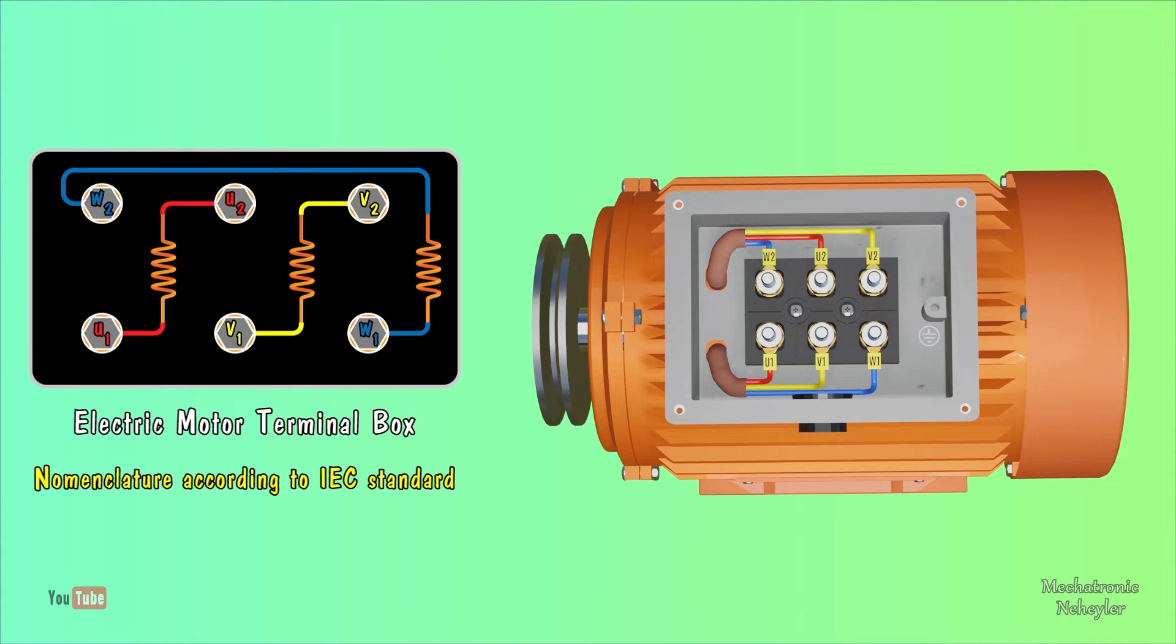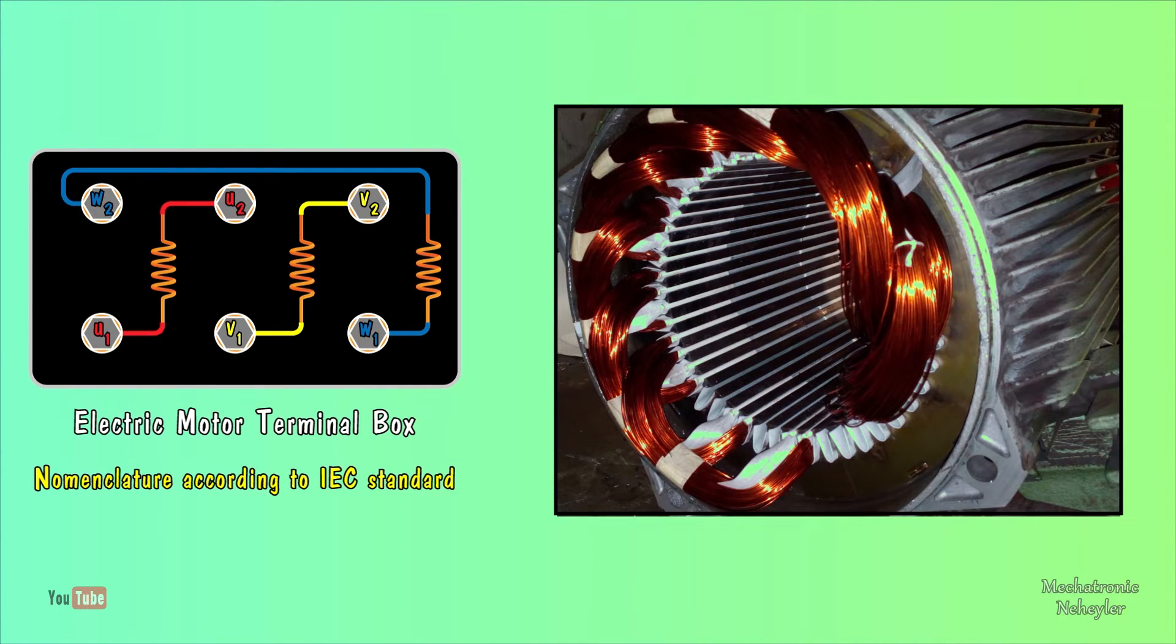On the left, the terminal box is shown, where it is indicated how the coils inside the electric motor are connected. Let us remember that the winding of an electric motor is done with a type of copper wire that has a special enamel coating that electrically insulates the wires from each other.